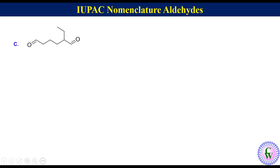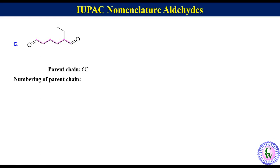Compound C — parent chain. In this molecule, the carbon chain with 6 carbon atoms containing both CHO groups is the parent chain. Numbering of the parent chain starts from CHO.